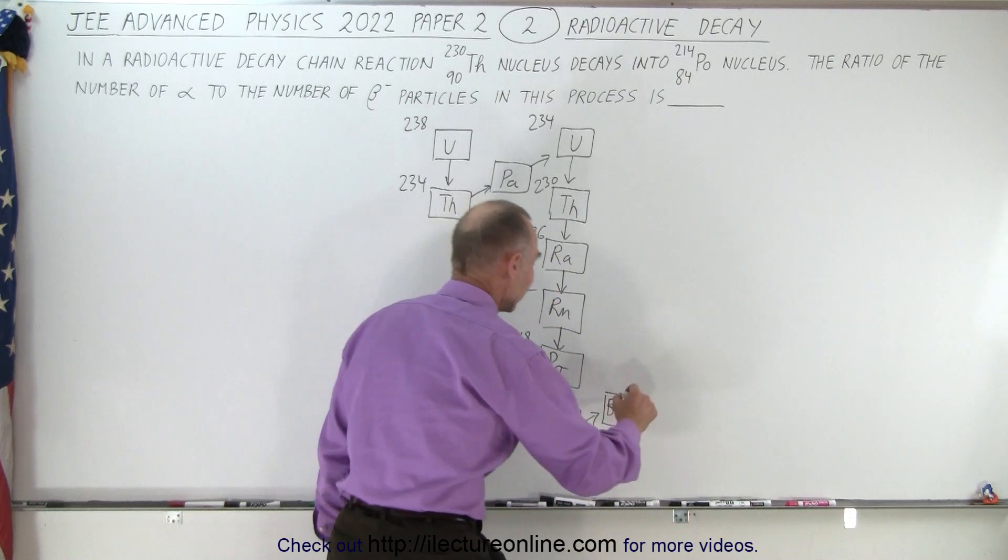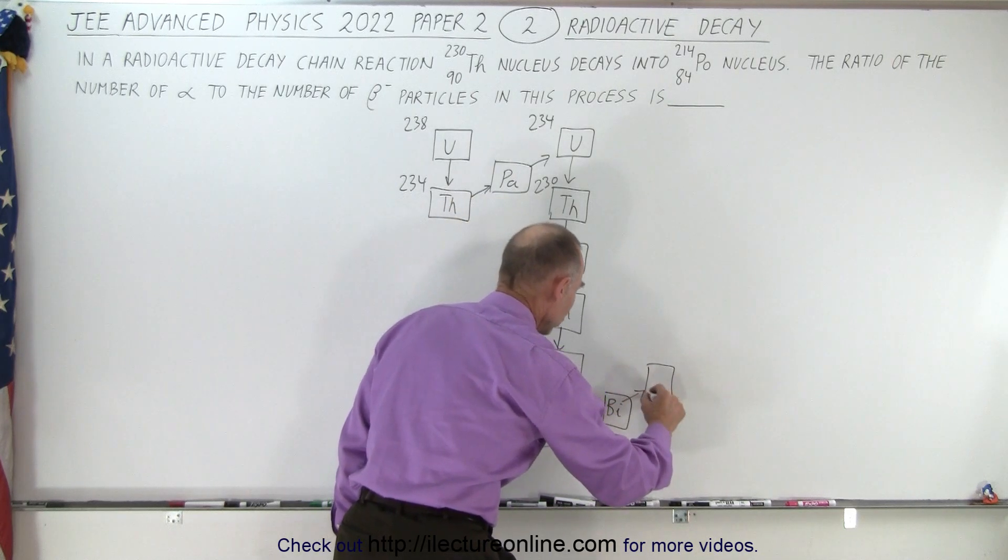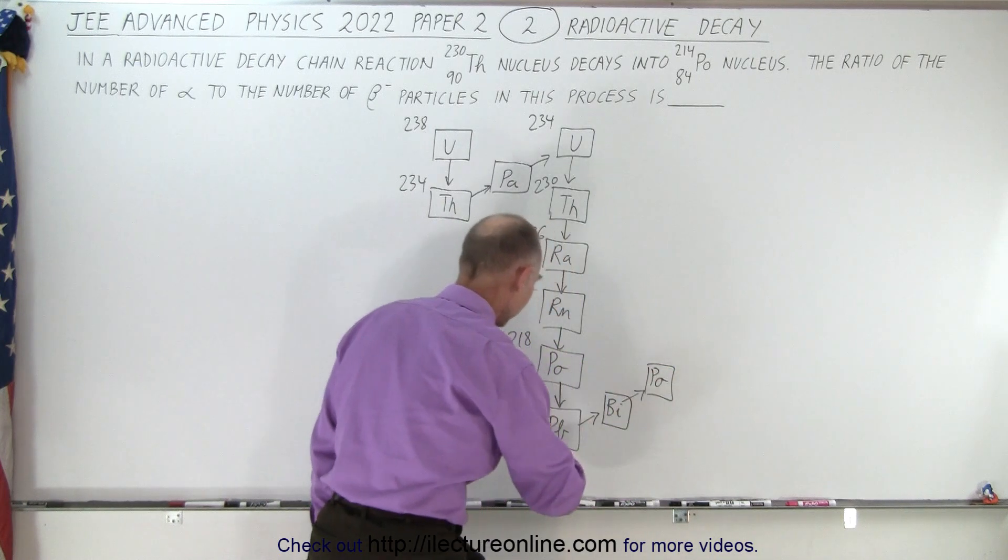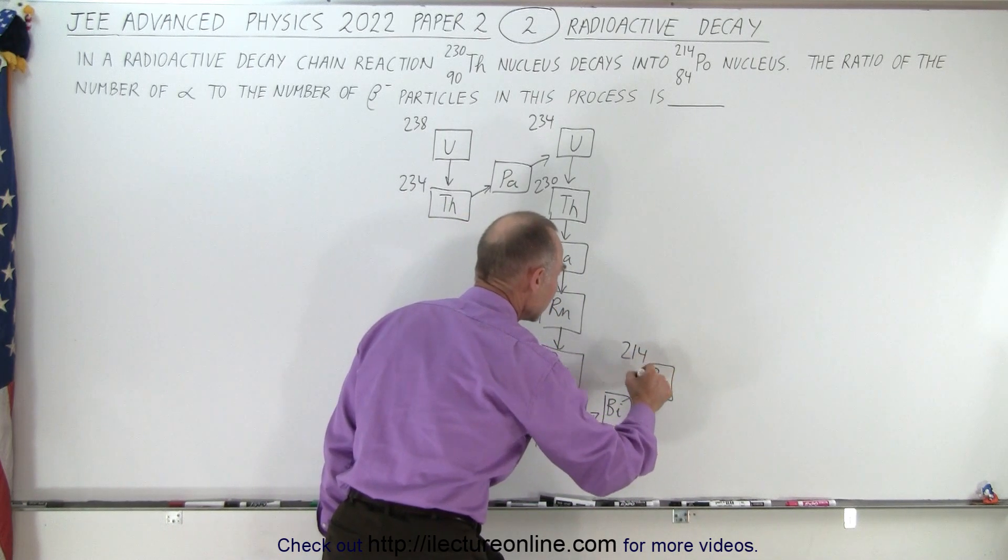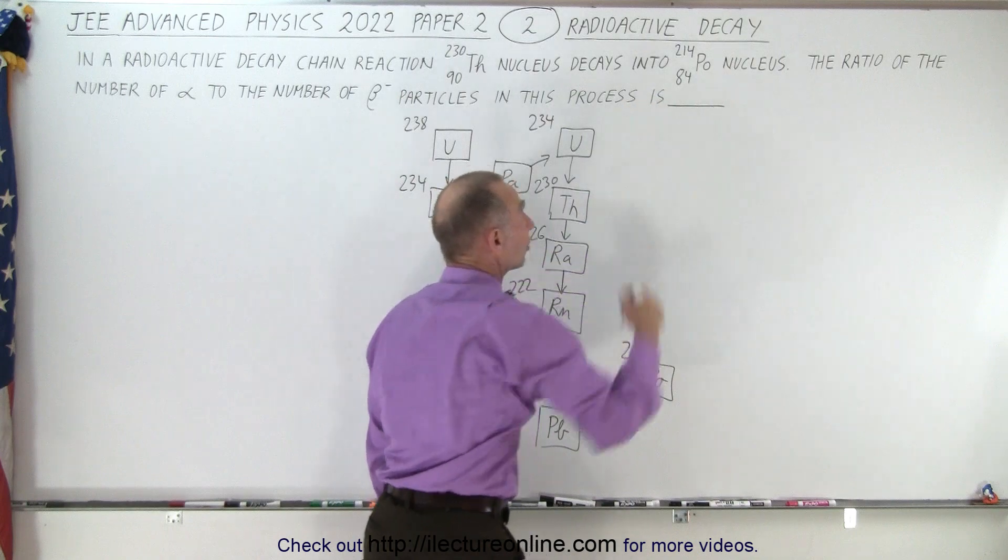In this case a beta decay to bismuth, and then another beta decay to polonium again. But now this polonium will be 214, and that polonium is the end result that we want.